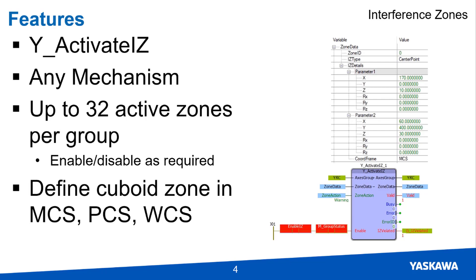Any type of mechanism can use interference zones. Each zone is assigned an ID number, 0-31, and the programmer writes code to enable and disable those zones under different circumstances.